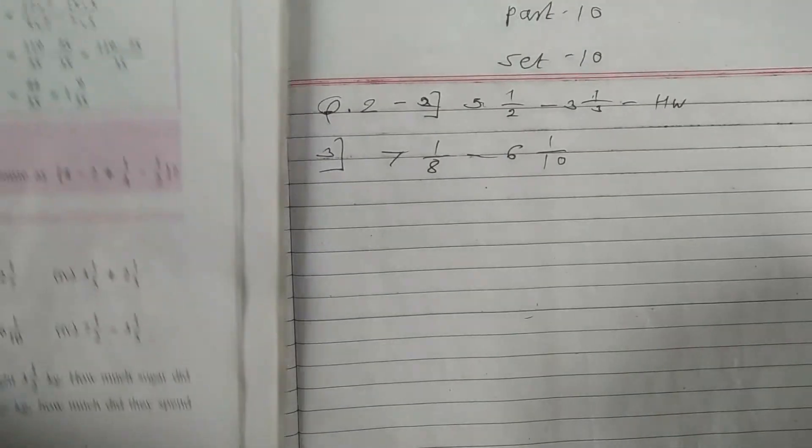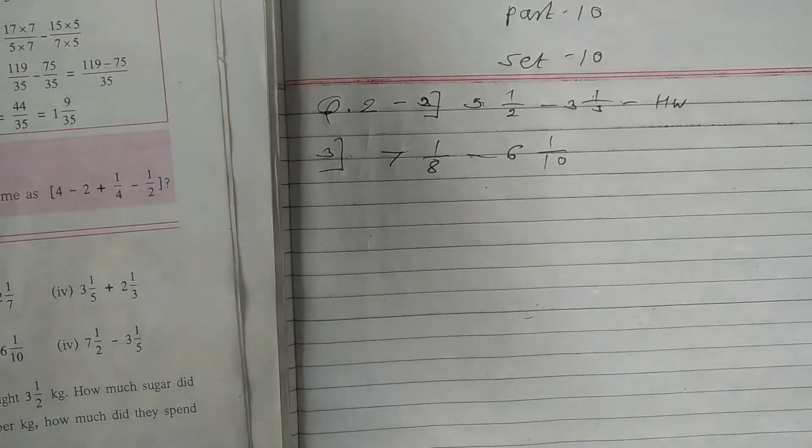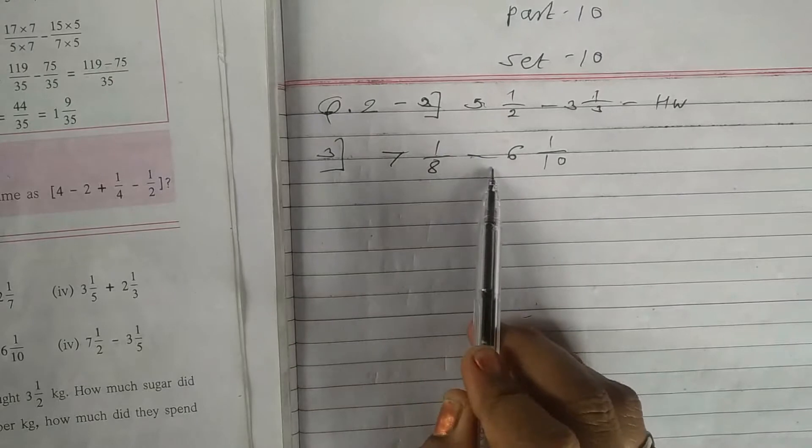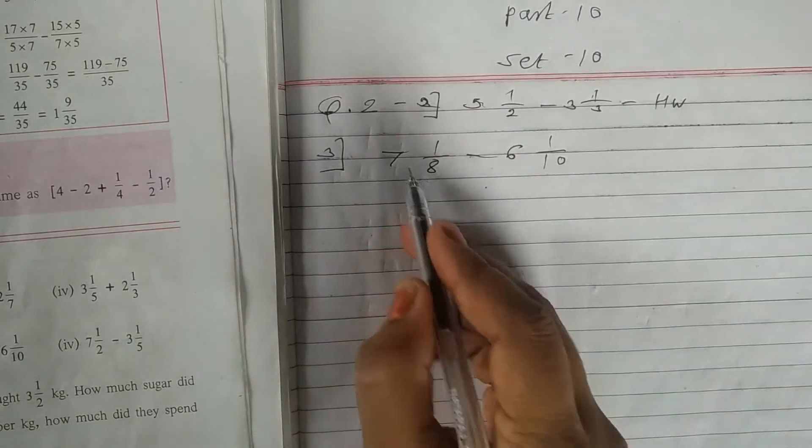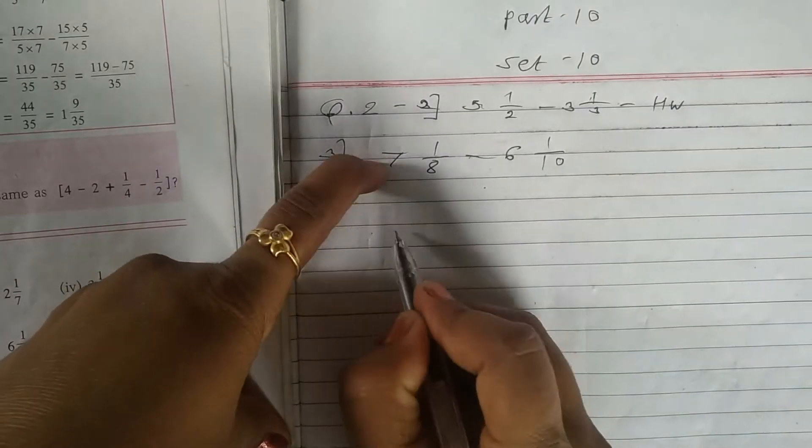Third problem I wrote already here. See here student base is 8, middle sign is subtraction and here base is 10. Here also you convert this QRD mixed number first into fraction.